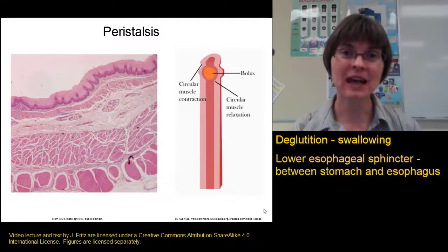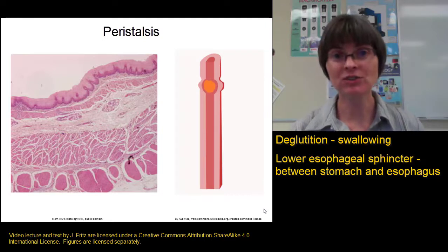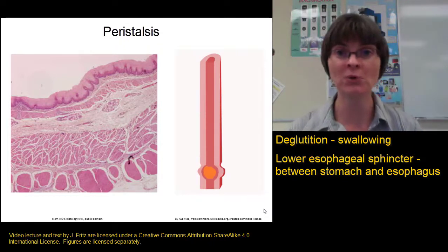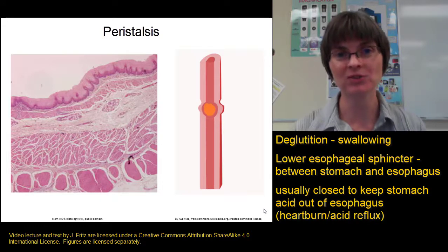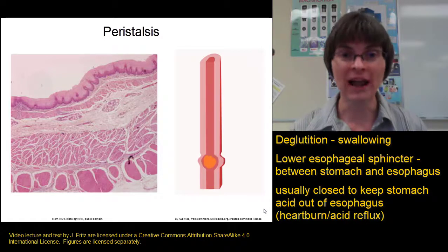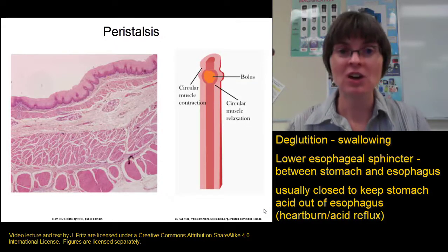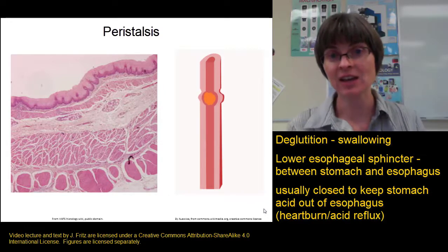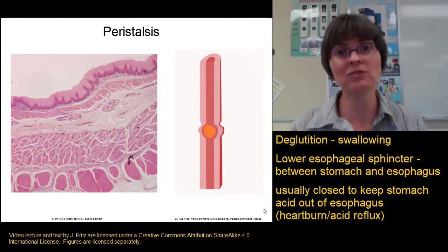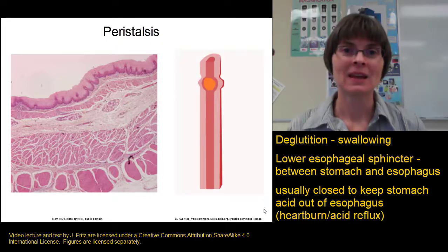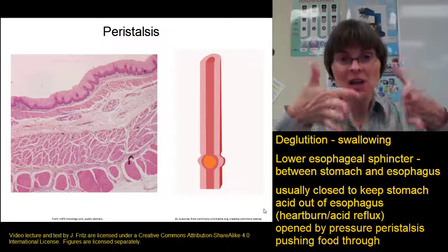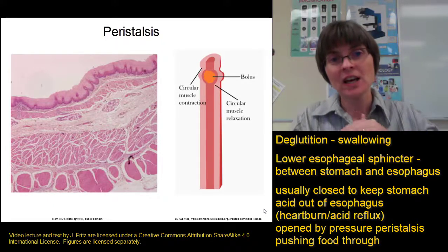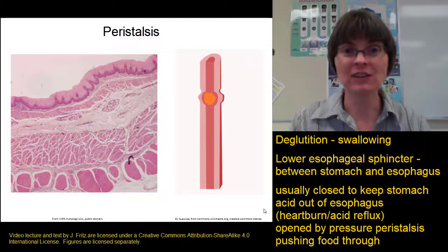At the bottom of the esophagus, the food encounters the lower esophageal sphincter, which sits between the esophagus and stomach. It remains closed most of the time — stomach acid in the esophagus causes heartburn or acid reflux, since stomach contents at very low pH damage esophageal cells. The sphincter opens due to pressure from peristalsis, which pushes food through into the stomach.